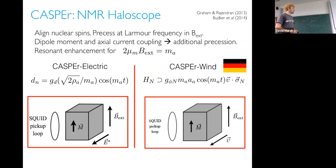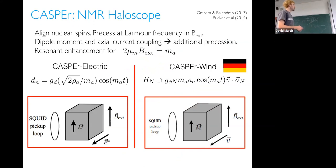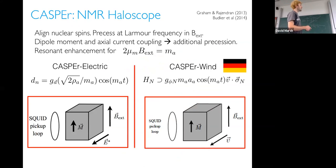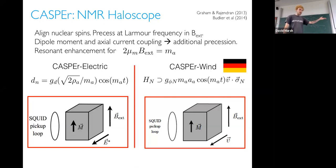Moving on to searches with different couplings — one of the other major developments is an experiment called CASPER, which stands for the Cosmic Axion Spin Precession Experiment. It's a nuclear magnetic resonance haloscope. This was proposed in a paper by Graham and Rajendran in 2013, and then again with Dmitry Budker and Alex Sushkov in 2014 with the full experimental proposal. When they took the idea to an experimentalist, they were told: 'You've just reinvented NMR.' So they decided to use all this existing NMR technology to search for axions.